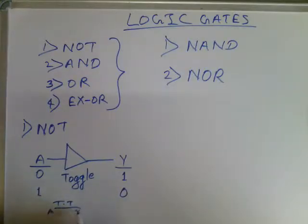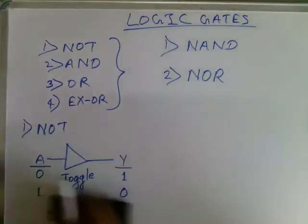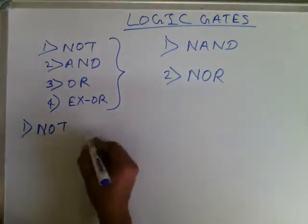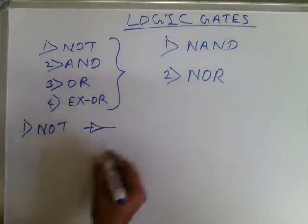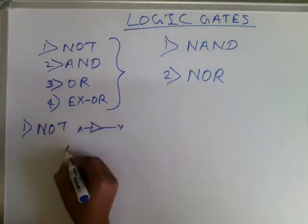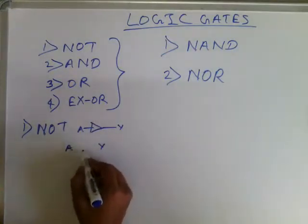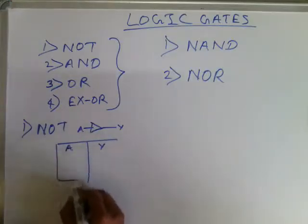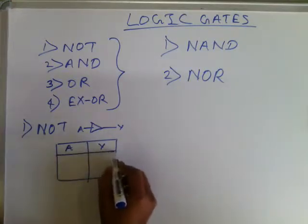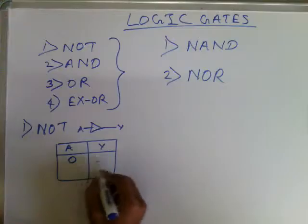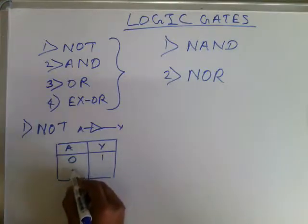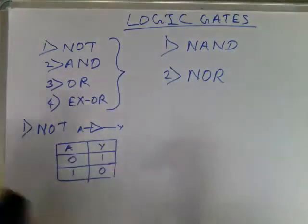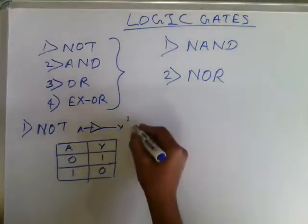So the truth table for NOT gate will be: A and Y. First row: input 0, output is 1. Second row: input 1, output is 0.